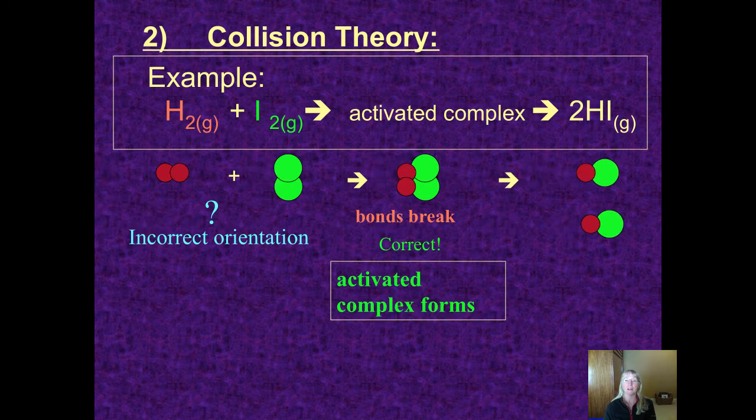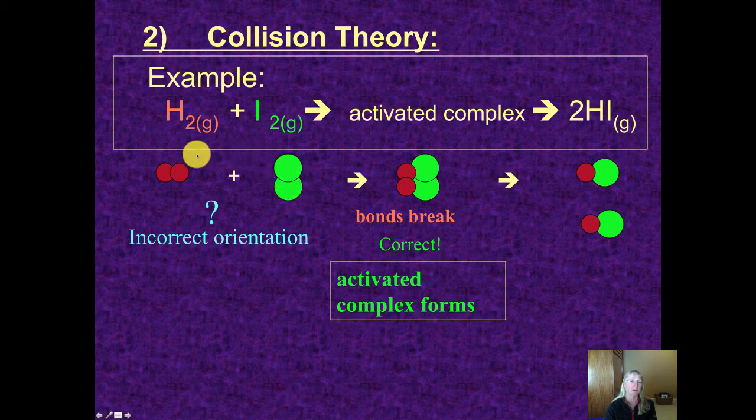The process ends up with two molecules of a hydrogen and an iodide together when you had started with two molecules, one of hydrogen and one of iodide.